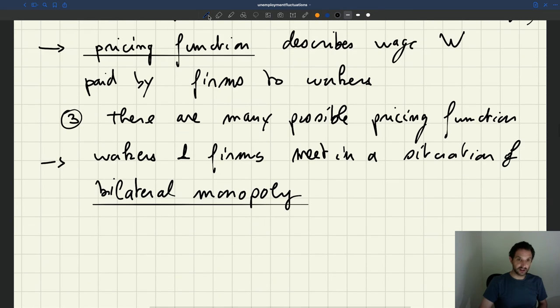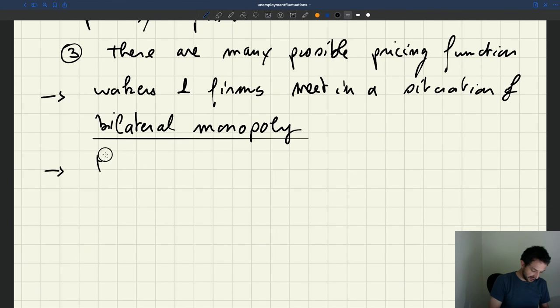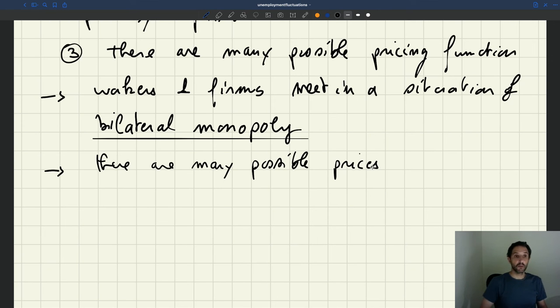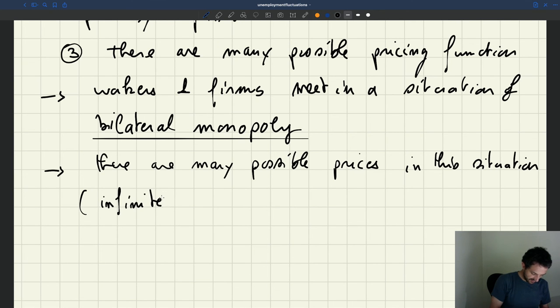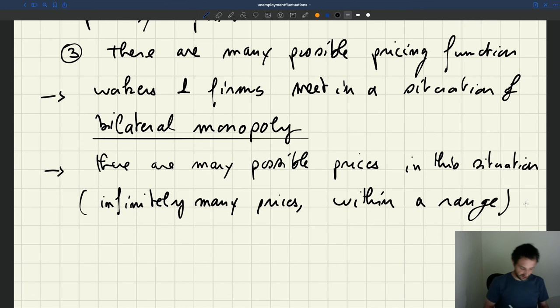So it's because you're in a situation of bilateral monopoly. In fact, the key result is that there are many possible prices that could arise in this situation. In fact there is a complete range - there are infinitely many prices that could arise within a range. So it means that we have actually a lot of leeway in specifying our pricing functions.